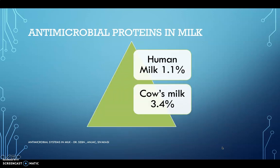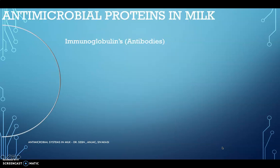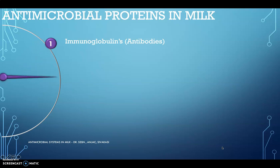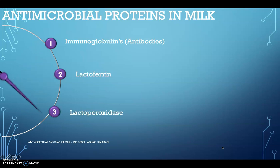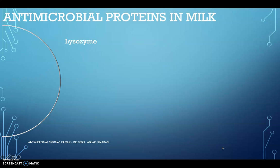Regarding the protein composition, cow's milk possesses 3.4% protein, which is higher than human milk at approximately 1.1%. There are six different types of antimicrobial proteins: first, immunoglobulins (antibodies); second, lactoferrin; third, lactoperoxidase; fourth, lysozyme; and additional ones as well.